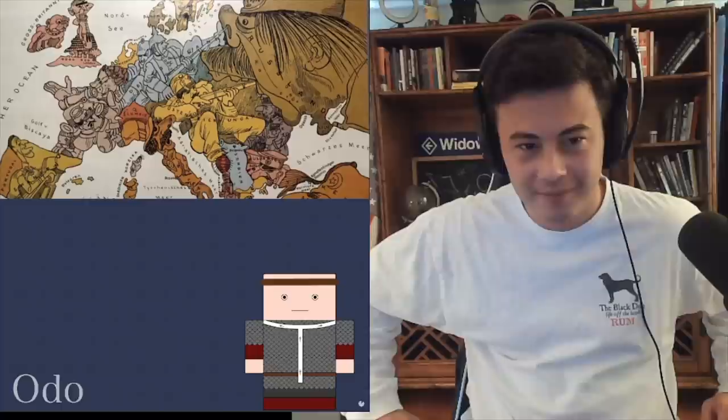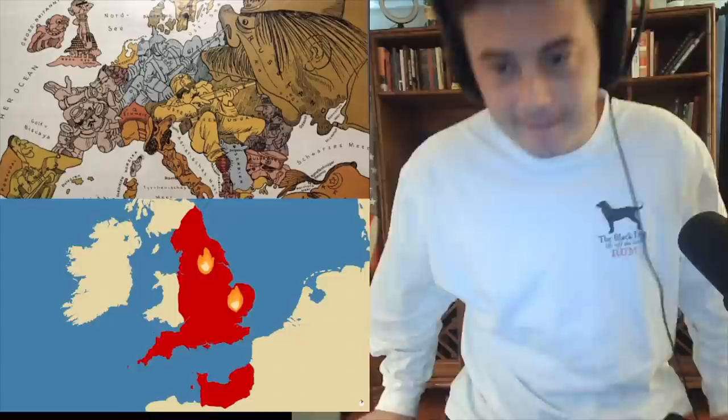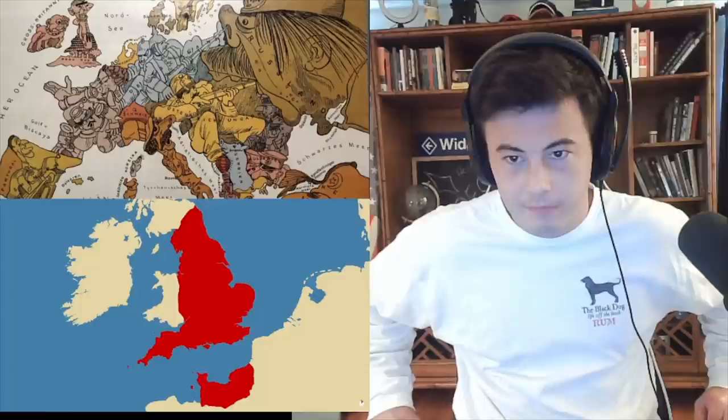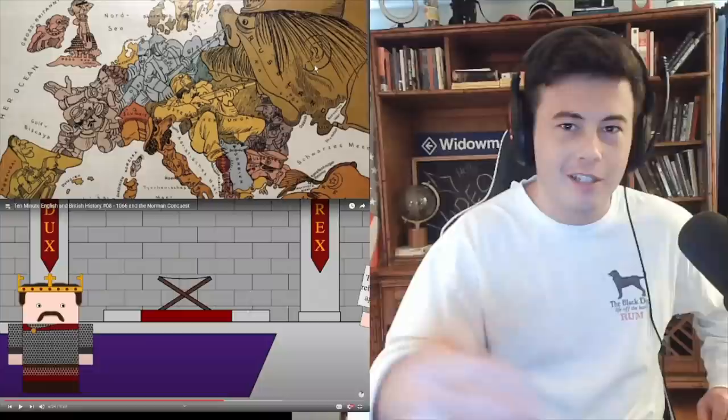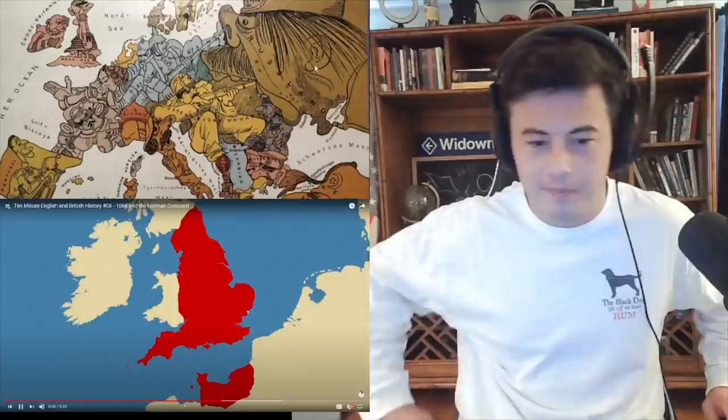There were many revolts against Norman rule in the wake of the conquest. One of the most famous rebels is a man called Hereward the Wake who led a guerrilla-style campaign against the Normans from Ely, which included slaughtering knights and looting Peterborough Abbey with the help of some Danes. Couldn't he read the faces of the people and be like, they're rebelling against us? Well, they look pretty happy. Okay.